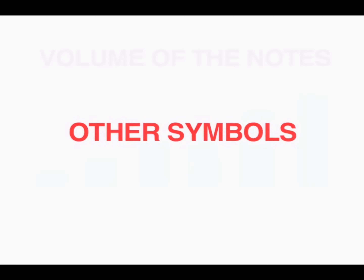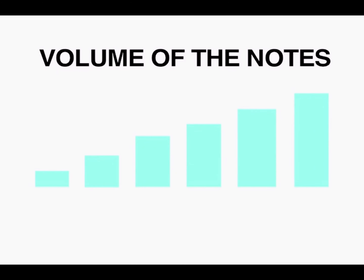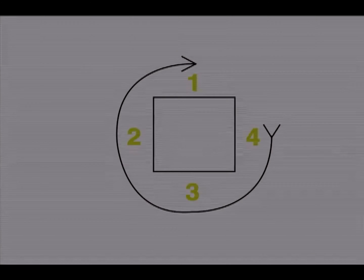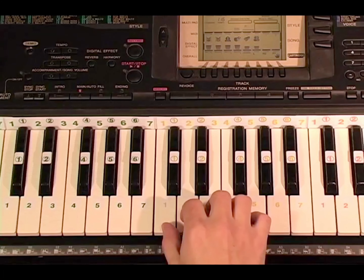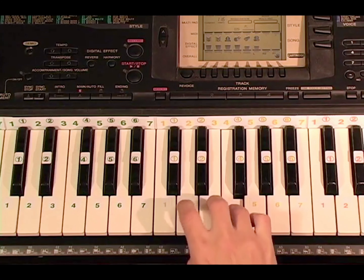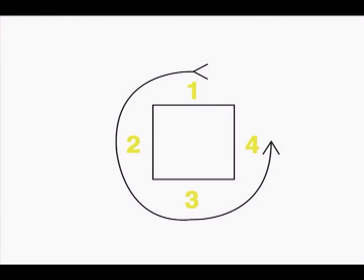These next symbols are for dynamics. In music, dynamics normally refers to the volume of a sound or a note. The dynamic markings are: Pianissimo, Piano, Mezzo piano, Mezzo forte, Forte, Fortissimo. Crescendo indicates to play gradually more loudly. Decrescendo indicates to play gradually more softly.